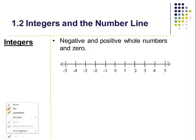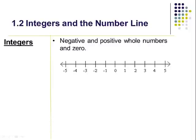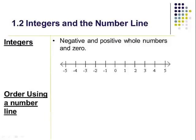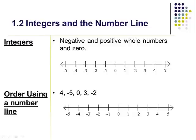I'm going to go ahead and click on this so I can show you along the way. So we have our integers — our negatives are over here to the left and our positives are over here to the right. Here are five numbers that I want you to go ahead and order on this number line. Positive four would go over here, negative five would go here, zero would go over here, three, and negative two.